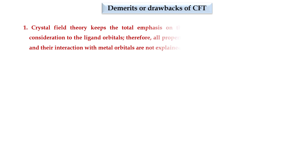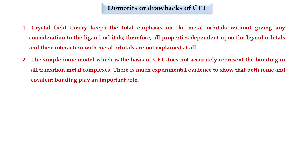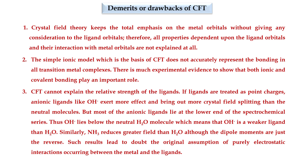Let's see the disadvantages or demerits of crystal field theory. Crystal field theory keeps total emphasis on the metal orbitals without giving any consideration to the ligand orbitals. Therefore, all the properties dependent upon the ligand orbitals and their interaction with the metal orbitals are not explained at all. The simple ionic model, which is the basis of CFT, does not accurately represent the bonding in all transition metal complexes. There is much experimental evidence to show that both ionic and covalent bonding play an important role. CFT cannot explain the relative strength of the ligands.